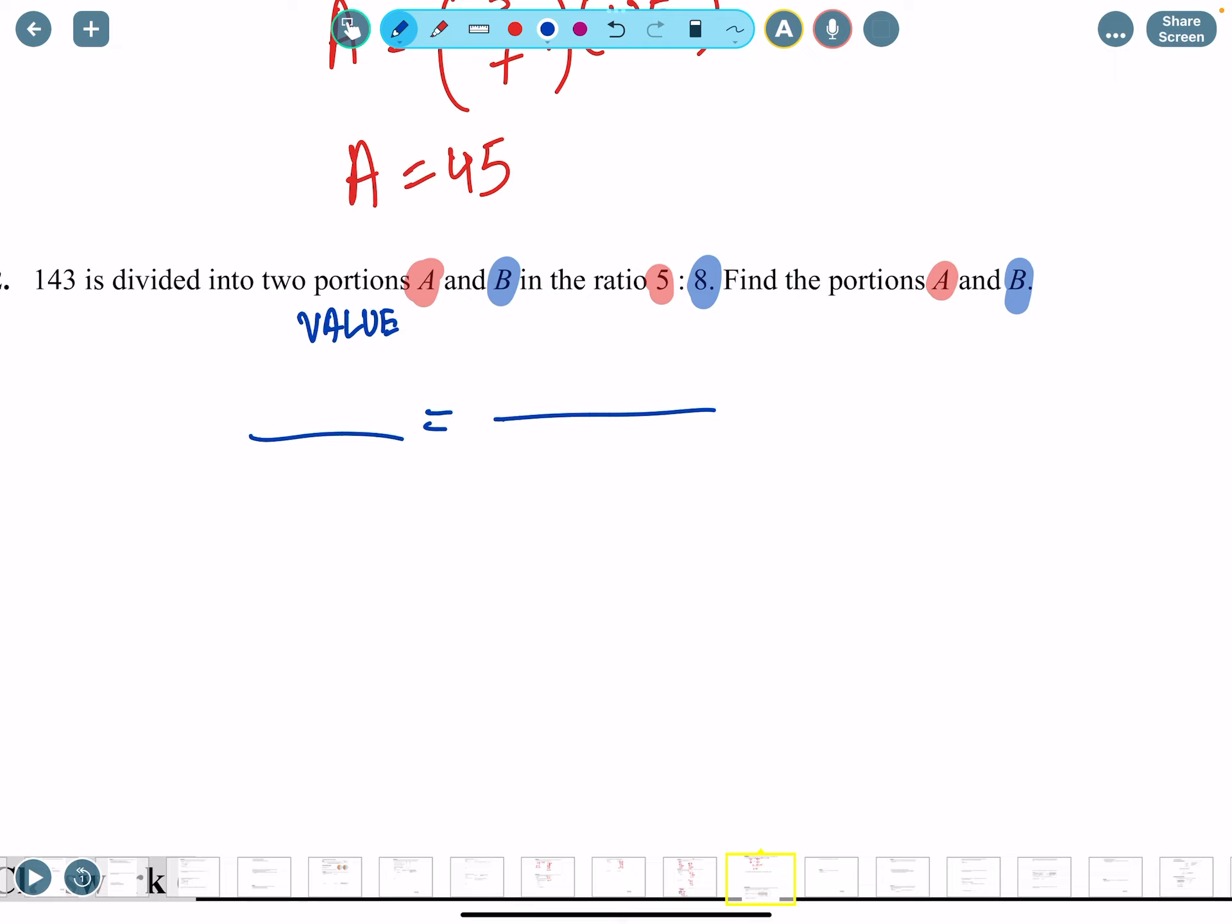I always put what I'm finding on the top left because that's easier for us. So we're finding B under value. The ratio for B is 8, 5 is for A, 8 is for B. At the bottom, 143 is actually the total - A plus B together becomes 143. We want to know what's the portion for B.